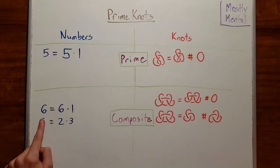On the other hand, six is not prime, it's composite. Sure, it can be written as six times one, it has a trivial factorization, but it can also be written as two times three. That is, it can be broken down into two smaller pieces.